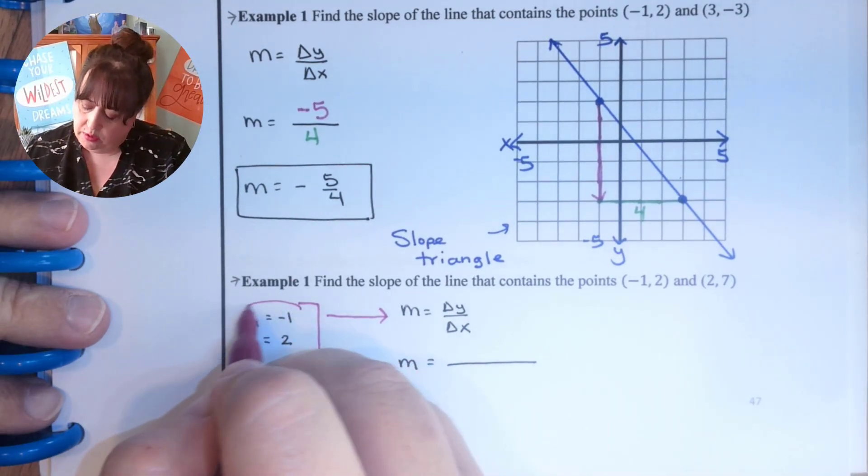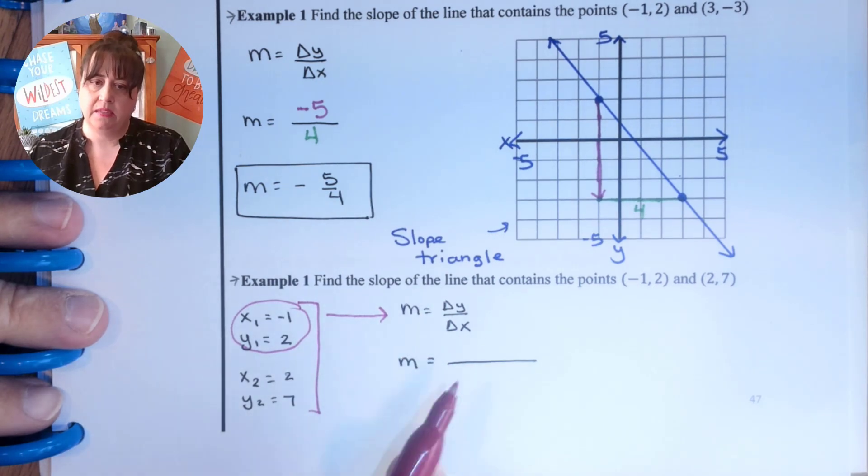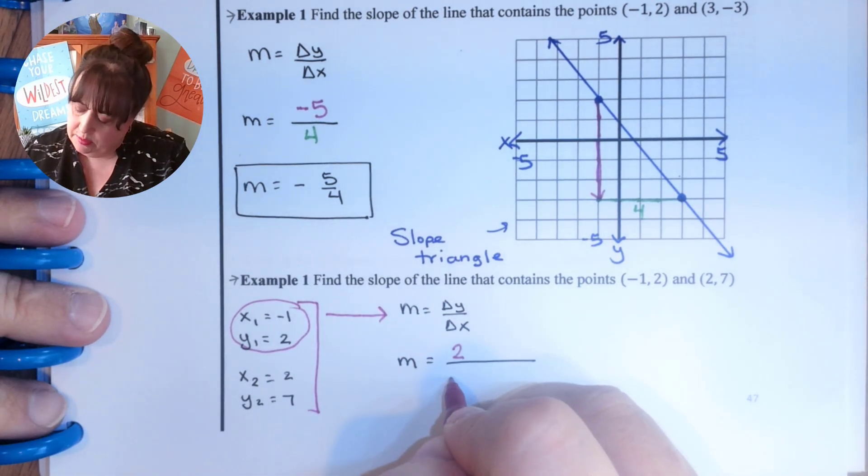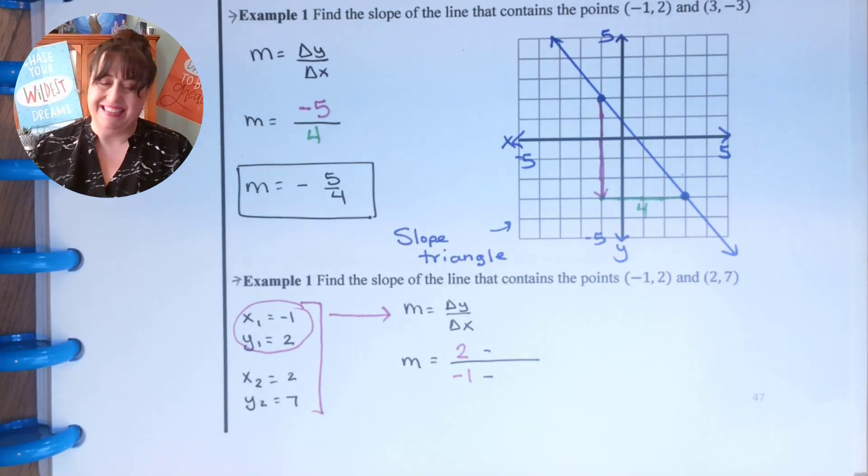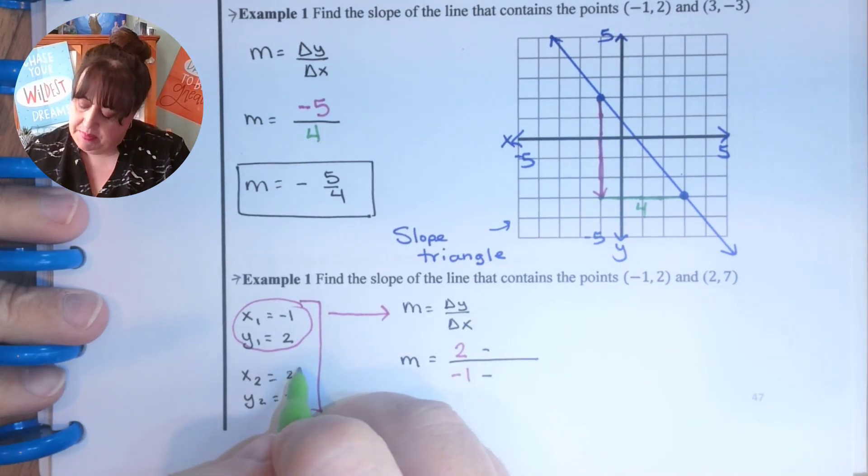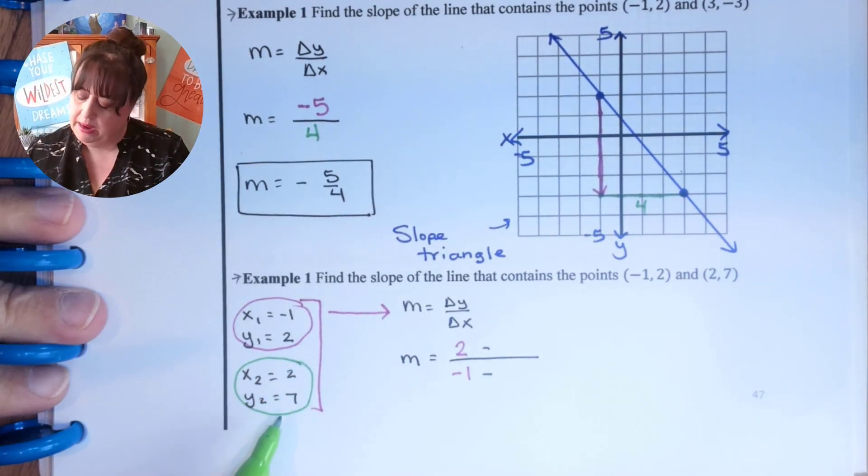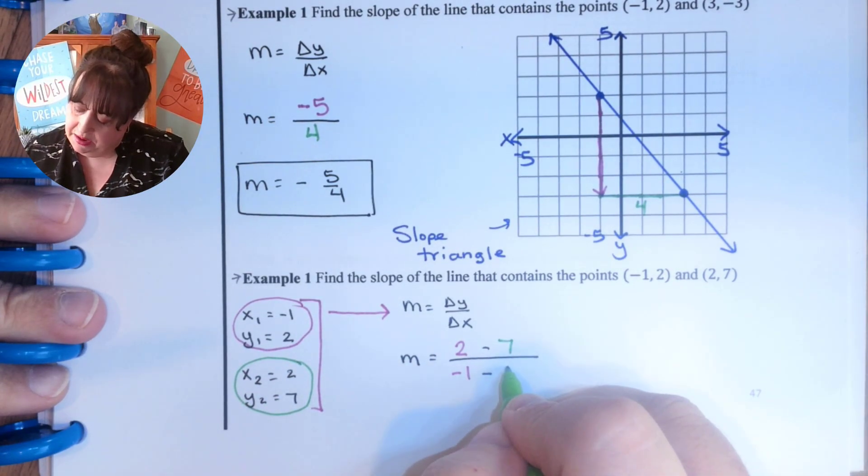So from my first coordinates, y is on top, x is on the bottom. So it's going to be a two and a negative one. And then it's subtraction because it's the difference. And then from my second point, it's right here, y is on top. So seven and two.